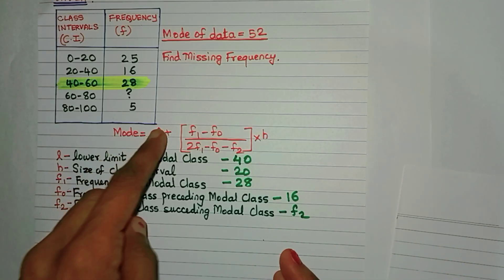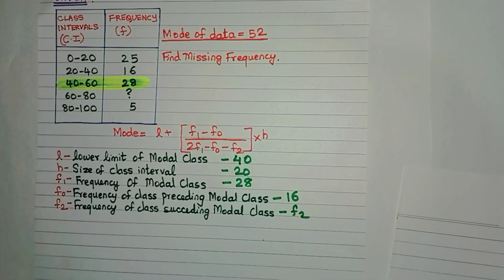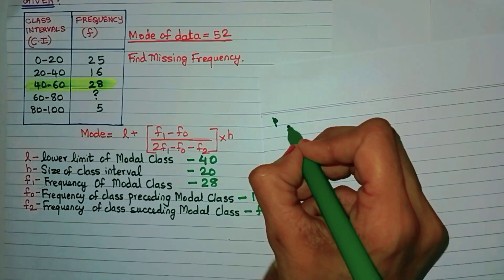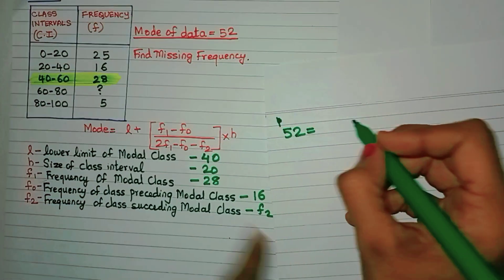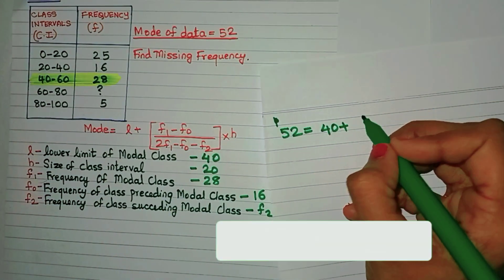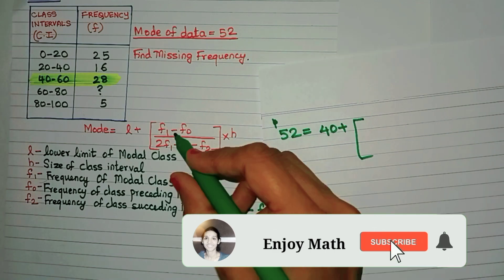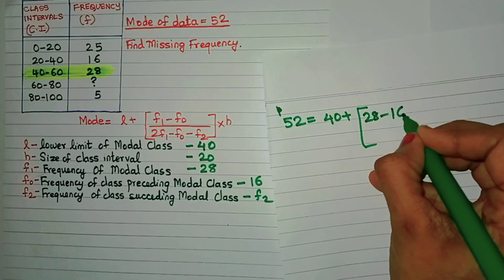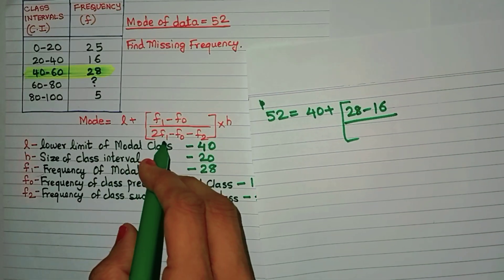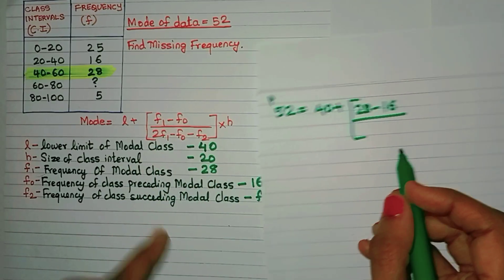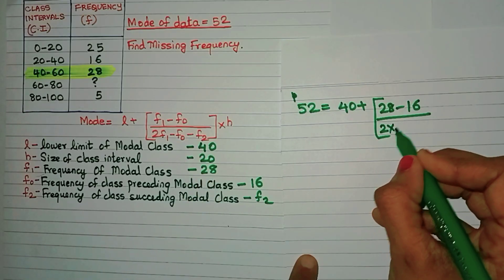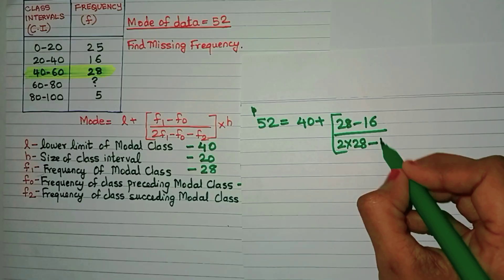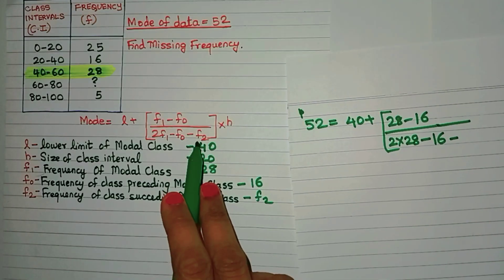So now that we know what are all these values, let's substitute it in the equation. So we have mode equals to. The mode is already given as 52, which is equal to L. So L is 40 plus what is in this bracket F1 minus F0, that is 28 minus 16. I hope you're getting it. Be careful while substituting divided by 2 times F1, that is 2 times 28 minus F0. Now F0 is 16 again minus F2.